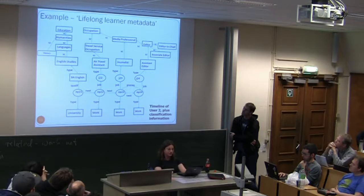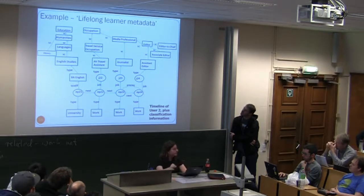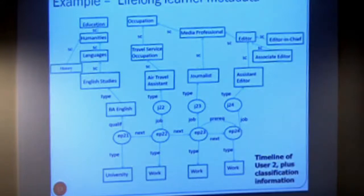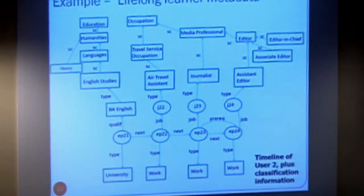The example is from a further learning domain - a graph with a bunch of episodes, either studying or working episodes. Episode 21 was a studying-type episode, whereas episodes 22 through 24 were career episodes. They are separated by labels meaning 'next' (followed in time) or 'prereq' (prerequisite - in this instance, episode 23 was mandatory before episode 24 could occur, meaning being a journalist had to be performed before getting the position of assistant editor).